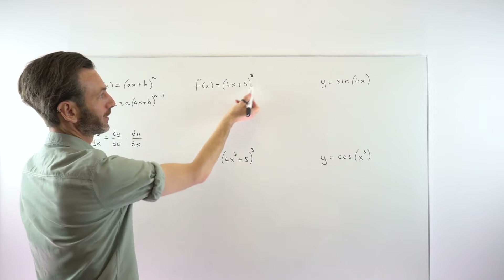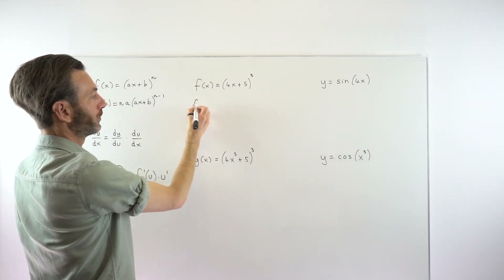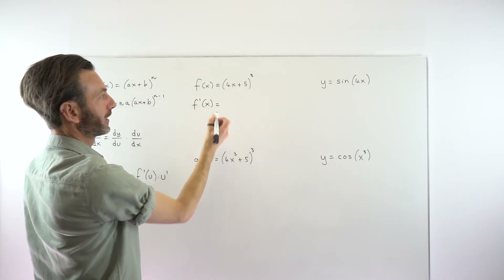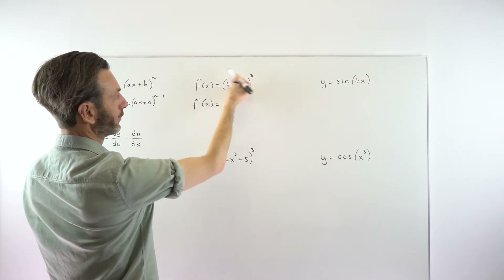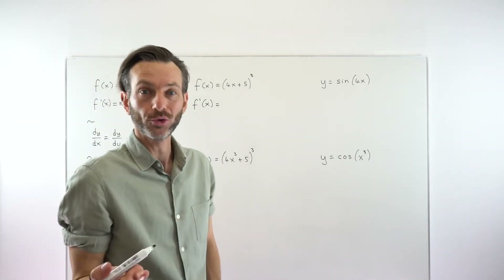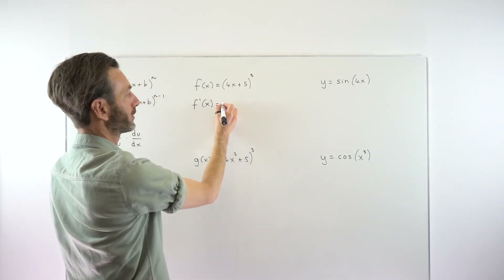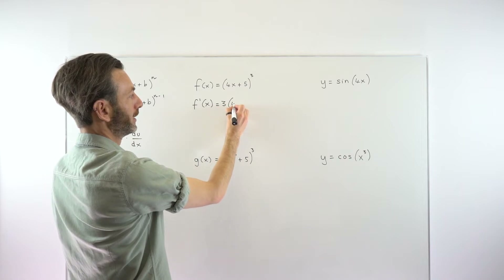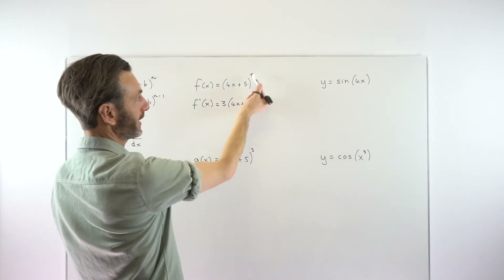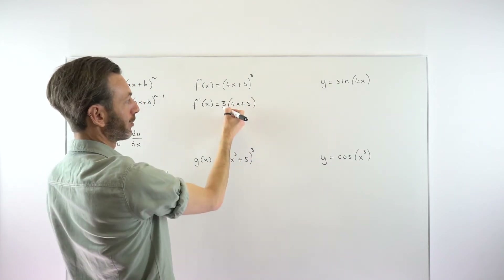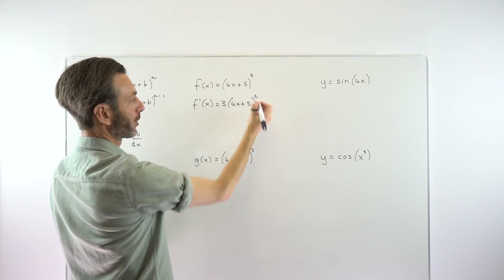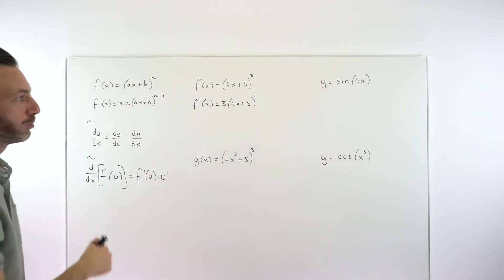Let's start with this straightforward example. We're going to differentiate the overall function first — the f dash part — using a normal power rule: bring the power in front, leave the bracket alone just as though that bracket were a big x, and reduce the power by one. That is our first derivative, the f dash u part.